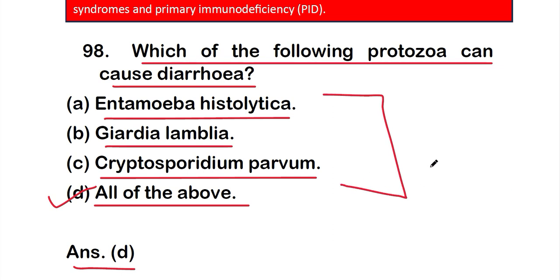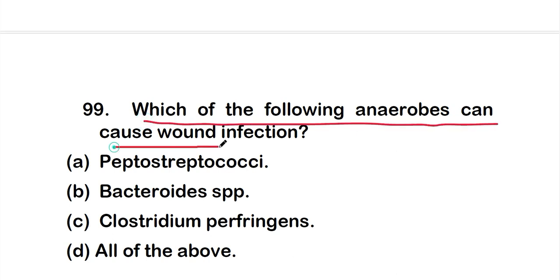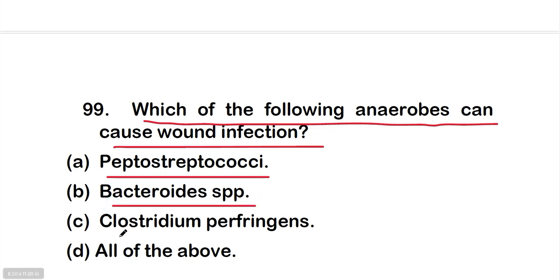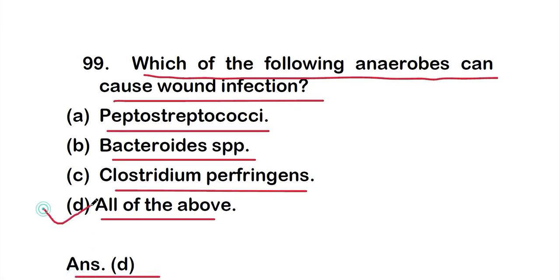Question number 99: which of the following anaerobes can cause wound infection? Options are: option A, Peptostreptococci; option B, Bacteroides species; option C, Clostridium perfringens; option D, all of the above. The right answer is option D — all of these anaerobes can cause wound infection.